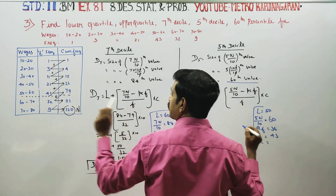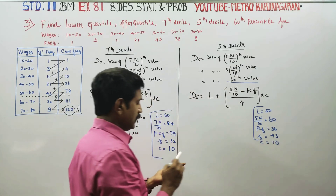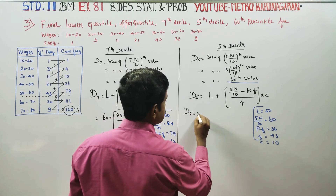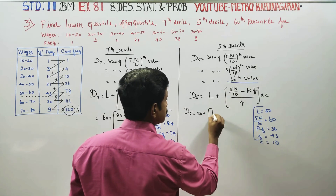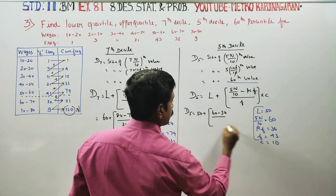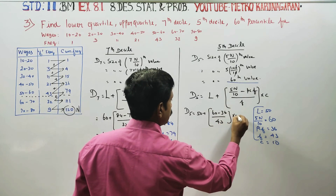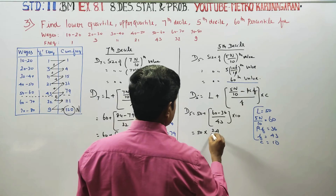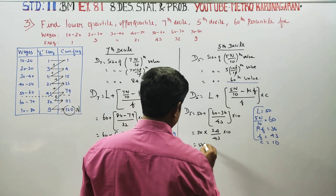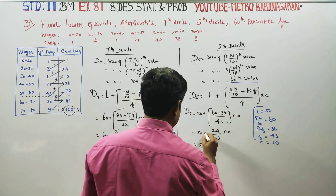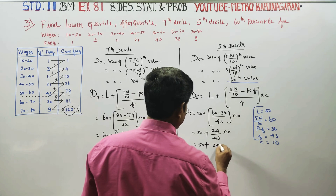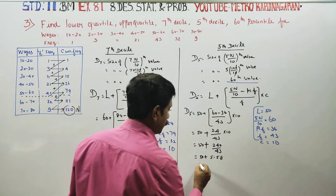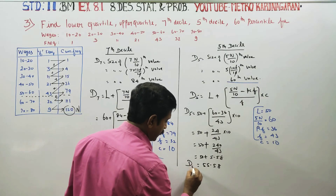The previous cumulative frequency PCF is 53. Class interval is 10. So D5 equals 50 plus (60 minus 36) by 43 into 10. That gives 50 plus 24 by 43 into 10. Calculating: 50 plus 5.58. D5 equals 55.58.